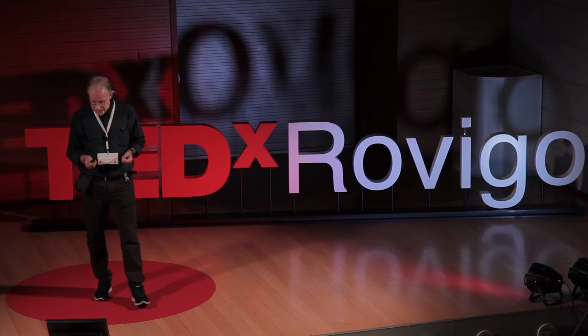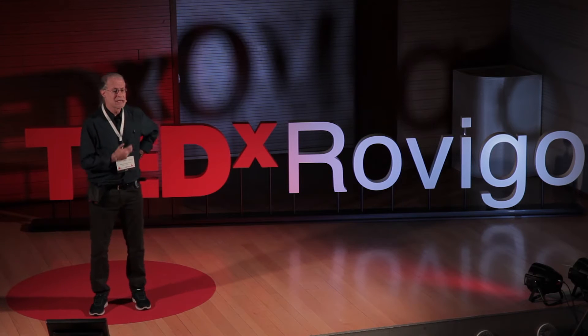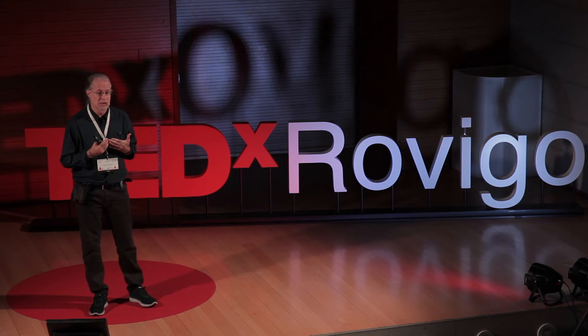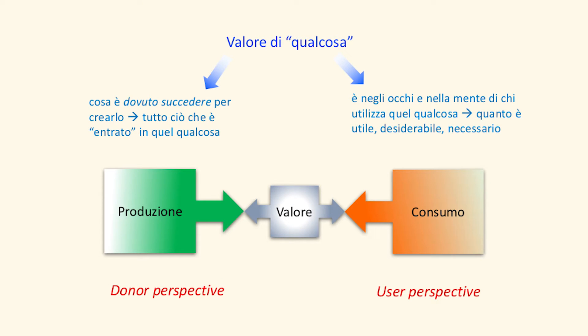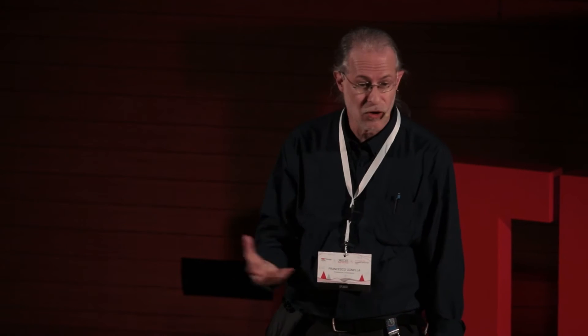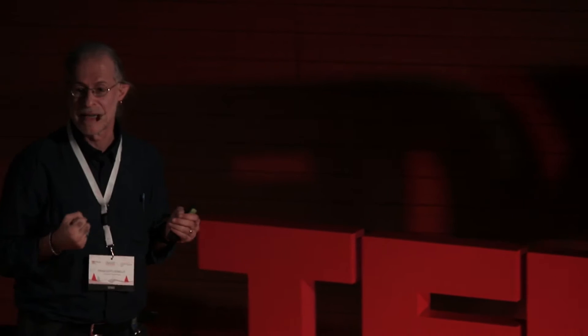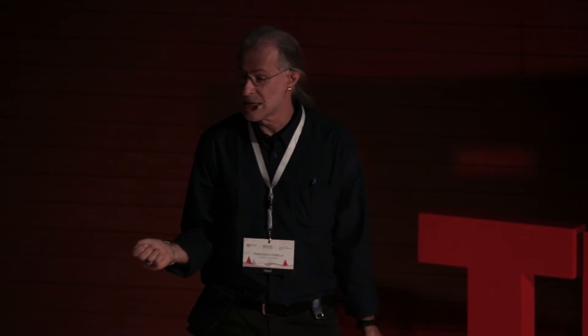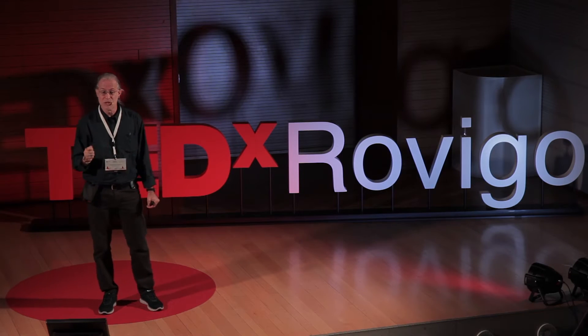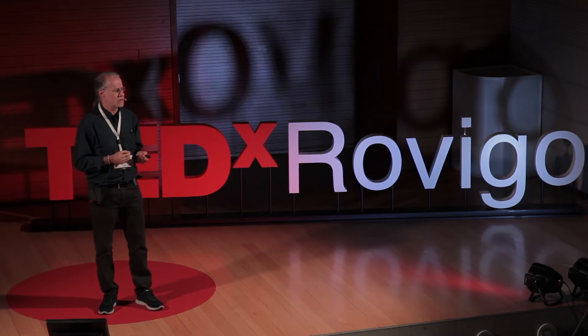Questa è una domanda intelligente perché sposta l'attenzione da quello che si chiama valore attribuito dall'utente, in quella che gli anglosassoni usano chiamare user perspective, al valore commisurato alla quantità di investimento necessaria per produrre quel qualcosa o quell'oggetto. Noi veniamo educati a stare dalla parte del consumatore e abbiamo a pronto cassa un sistema contabile che è il prezzo, molto semplice, molto comodo, con cui possiamo confrontare qualsiasi cosa.